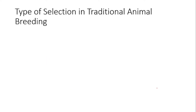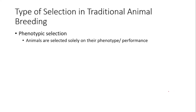Let's discuss different types of selection used in traditional animal breeding. As this is an overview lecture, I will only provide basic information on selection. The very basic type of selection is phenotypic selection, which is used in traditional animal breeding. Nowadays we have different advanced selection methods, and I will make another lecture to discuss those. For this lecture I will only focus on very basic information.